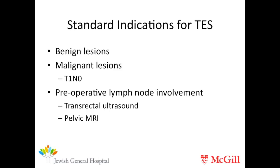The standard indications for transanal endoscopic surgery include excision of benign and malignant lesions, from benign adenomas that are not endoscopically resectable to early rectal cancers. TES can be curative in T1N0 rectal cancers. Lymph node involvement can be assessed by preoperative transrectal ultrasound and pelvic MRI, and if positive, precludes treatment with transanal endoscopic surgery.